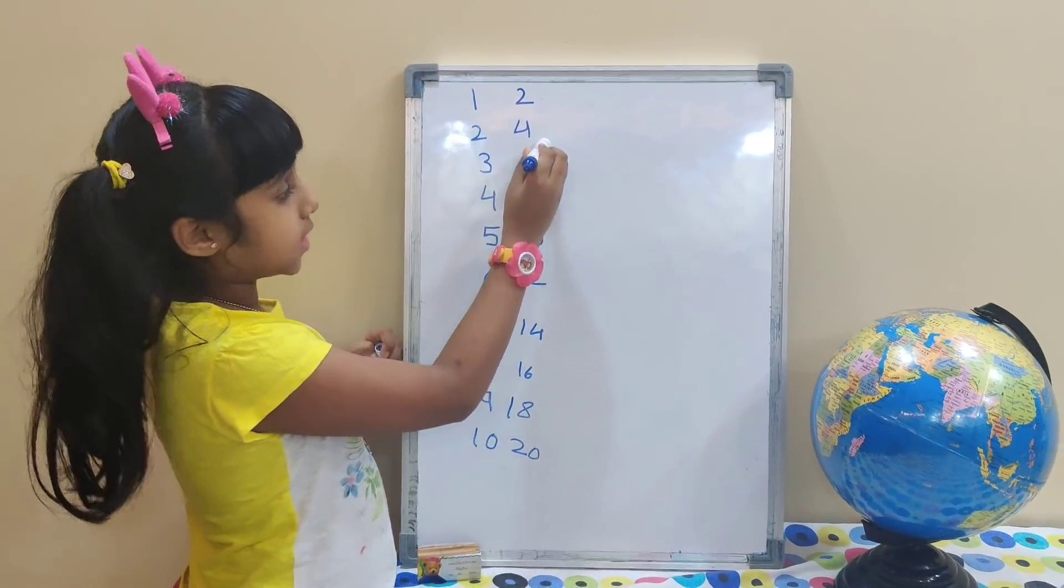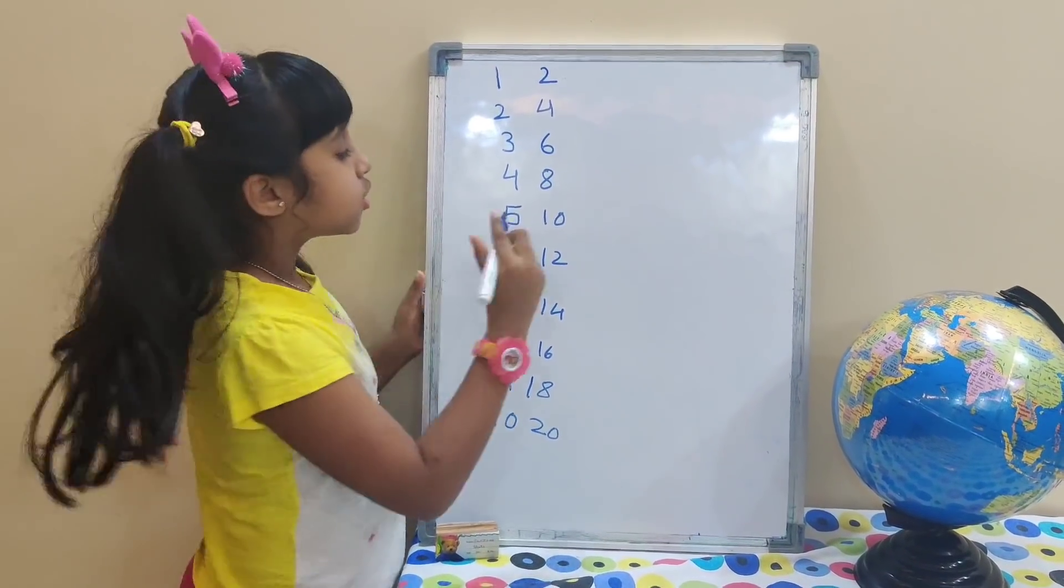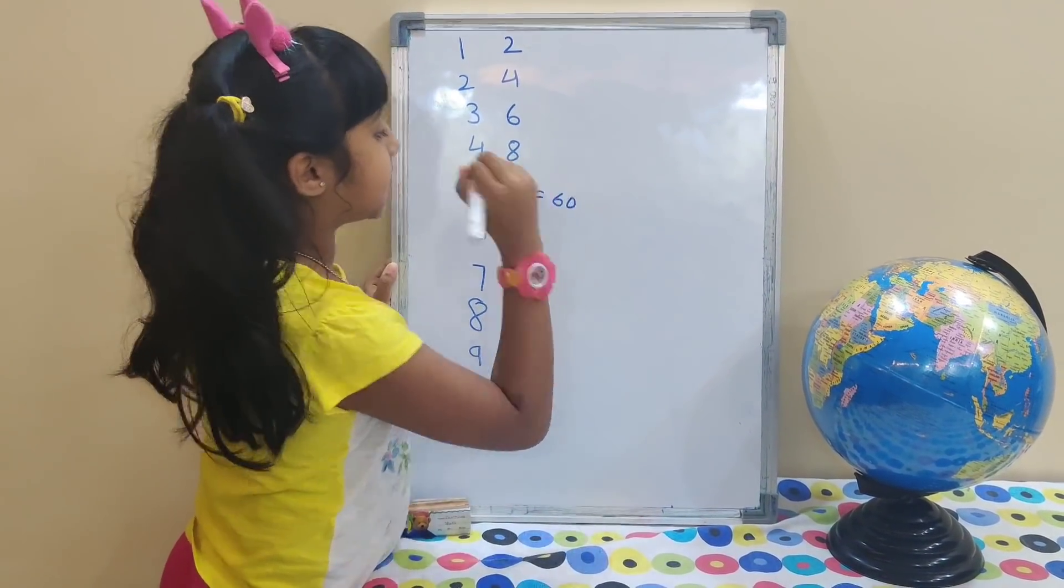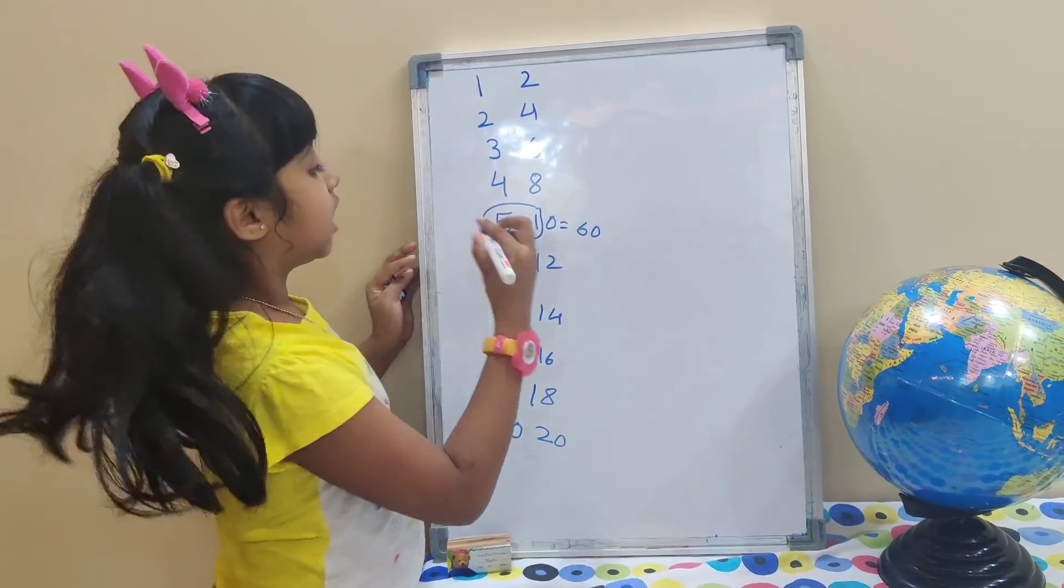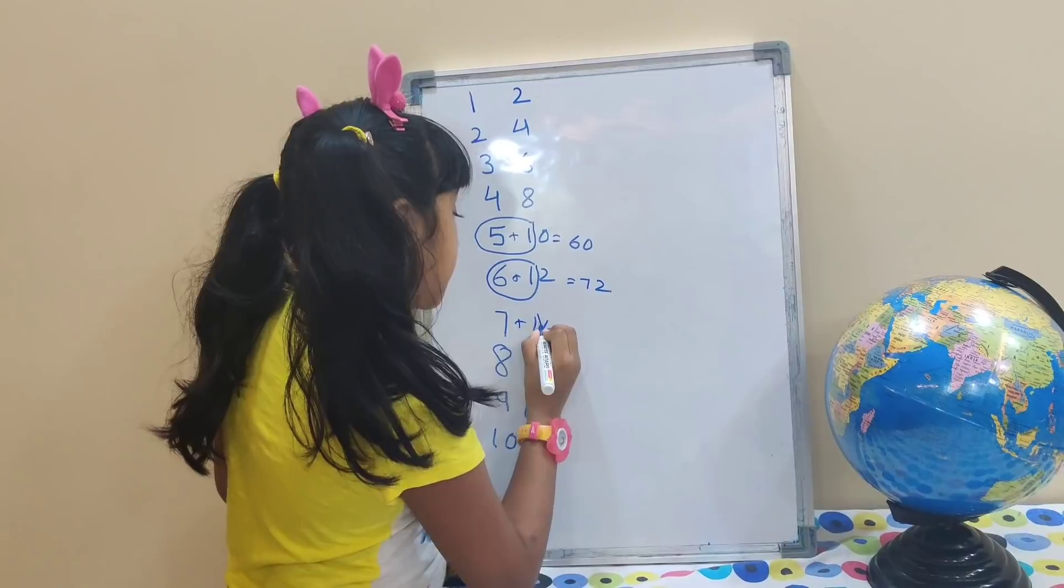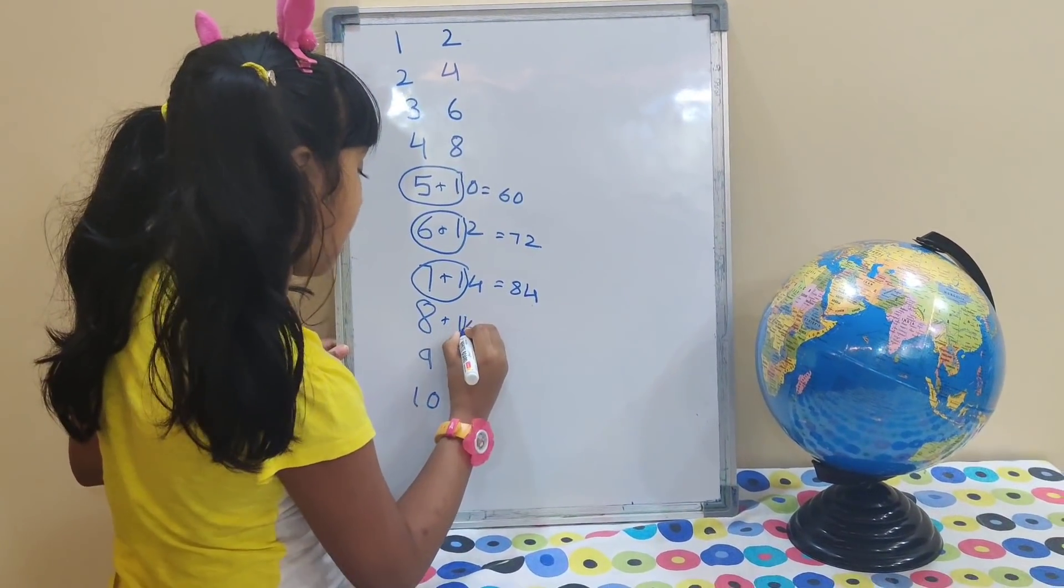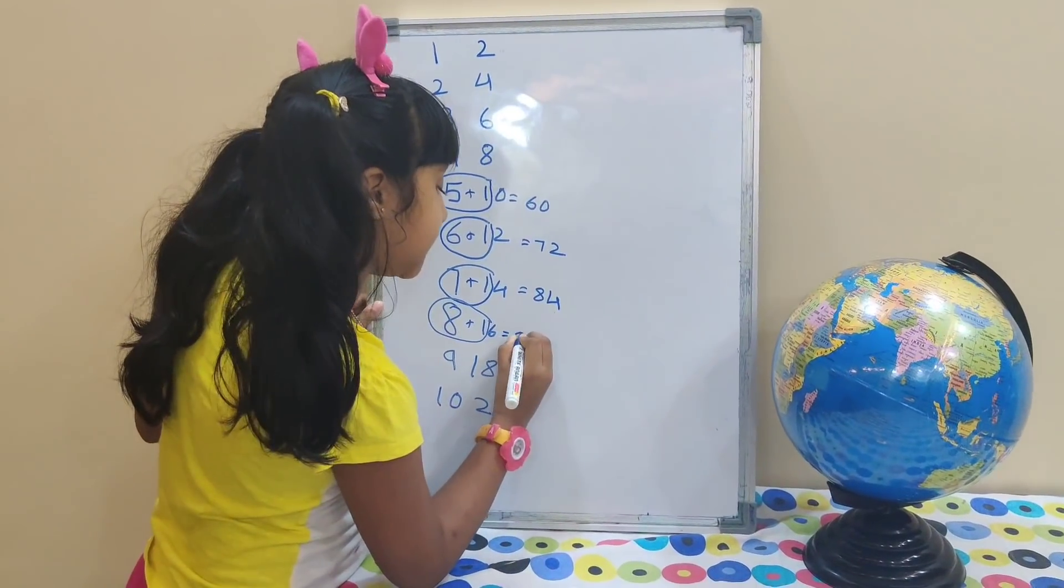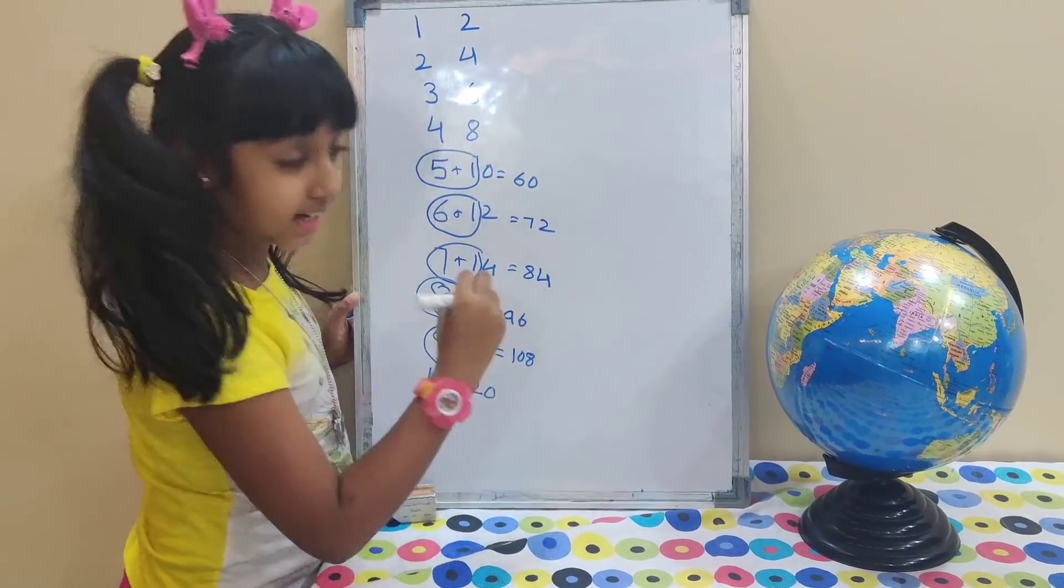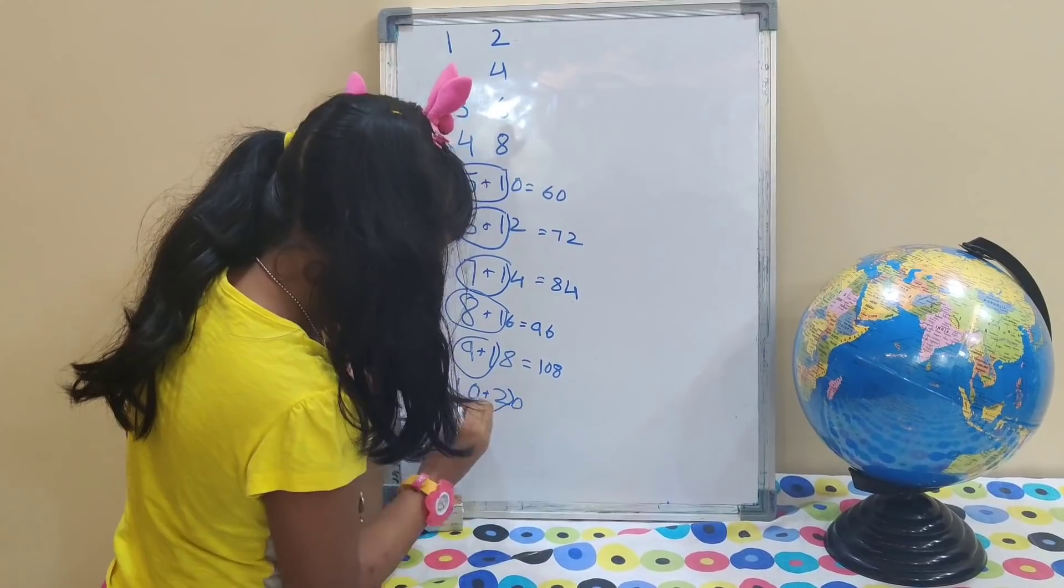Now 12 1's are 12, 12 2's are 24, 12 3's are 36, 12 4's are 48, 12 5's are... How did this come from? We will add 5 plus 1 equals 6 and 0, 60. That means 12 5's are 60. Next 6 plus 1, 7 and 7 and 2, 72. Now 7 plus 1 equals 8 and 8 and 4 equal 84. 8 plus 1, 9 and 9 and 6, 96. Then 9 plus 1, 10 and 10 and 8, 108. Now 10 plus 2 equal 12 and 12 and 0 equal 120.